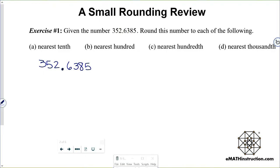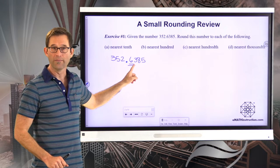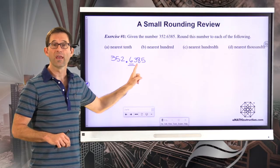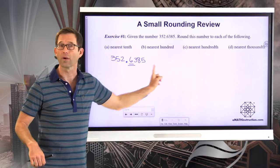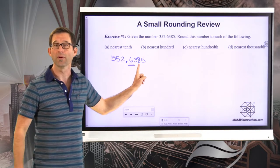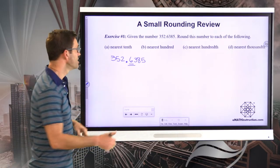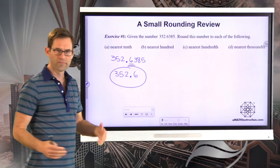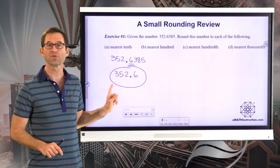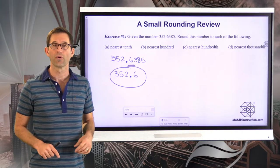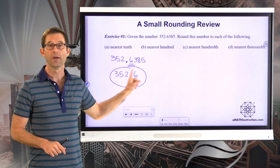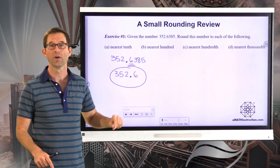If I want to round 352.6385 to the nearest tenth, that's the six digit. I look at the three — the next digit to the right. If that digit is five or more, I round the six up to a seven. If that digit is four or less, I keep it as a six. Since that's a three, this rounds to 352.6. This number is closer to 352.6 than it is to 352.7.